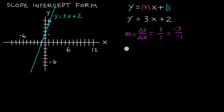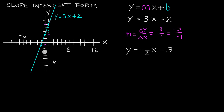Let's look at the line y is equal to negative 1 half x minus 3. In this case our b is negative 3. To mark b, we go to the y-axis, start at the origin, and go to negative 1, negative 2, negative 3 units in the y direction. This point marks our b which is negative 3. Our slope m is negative 1 half.